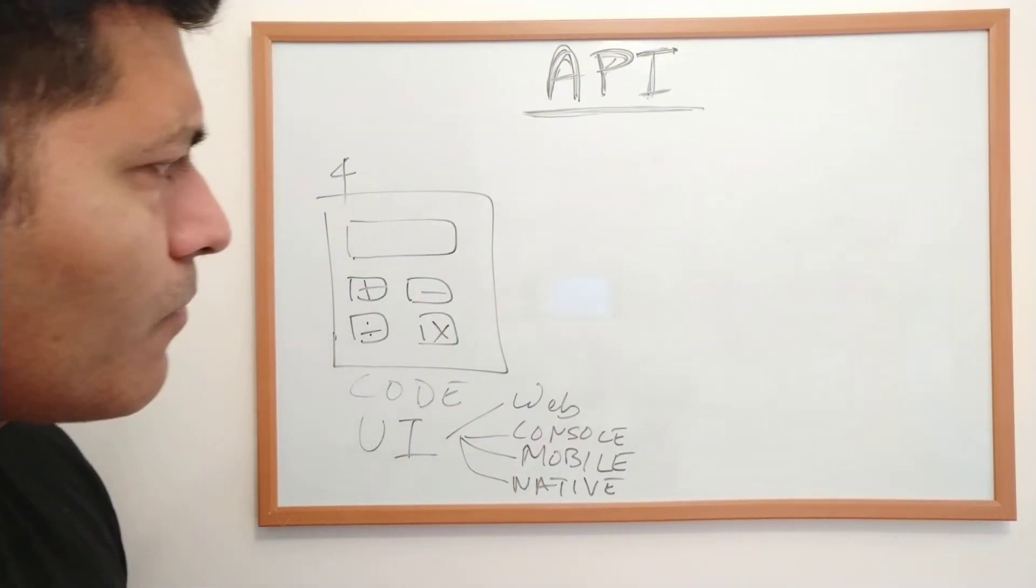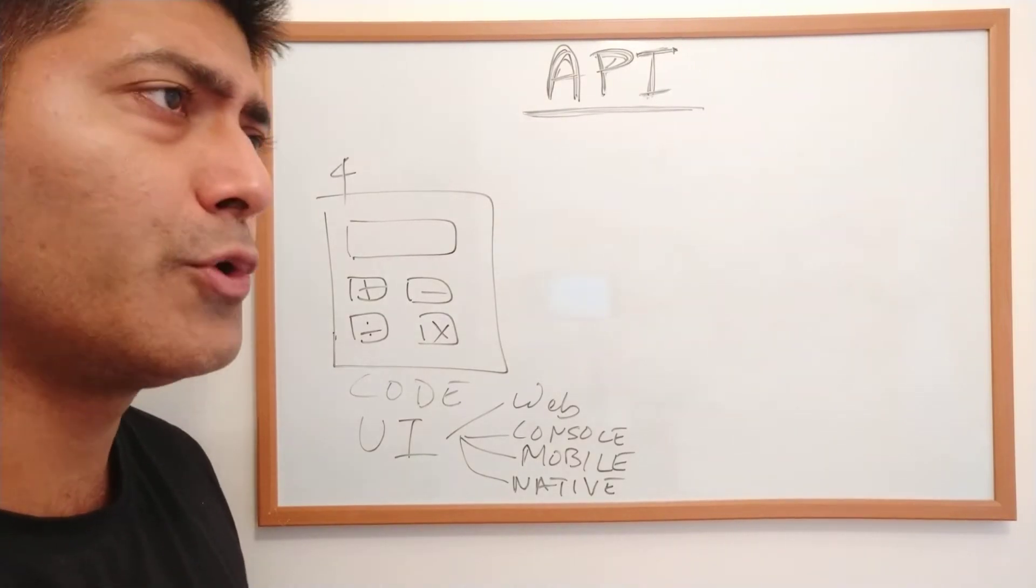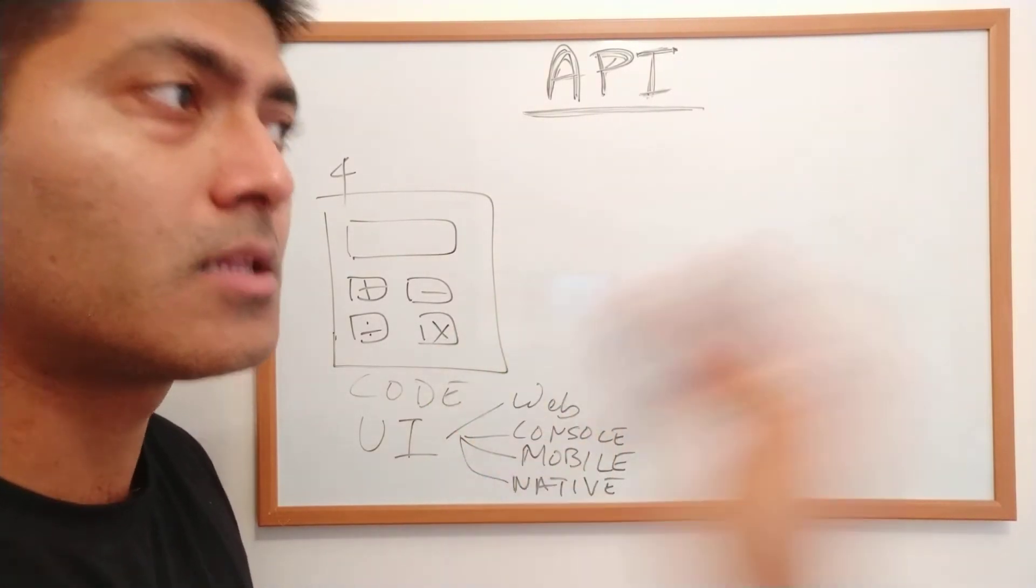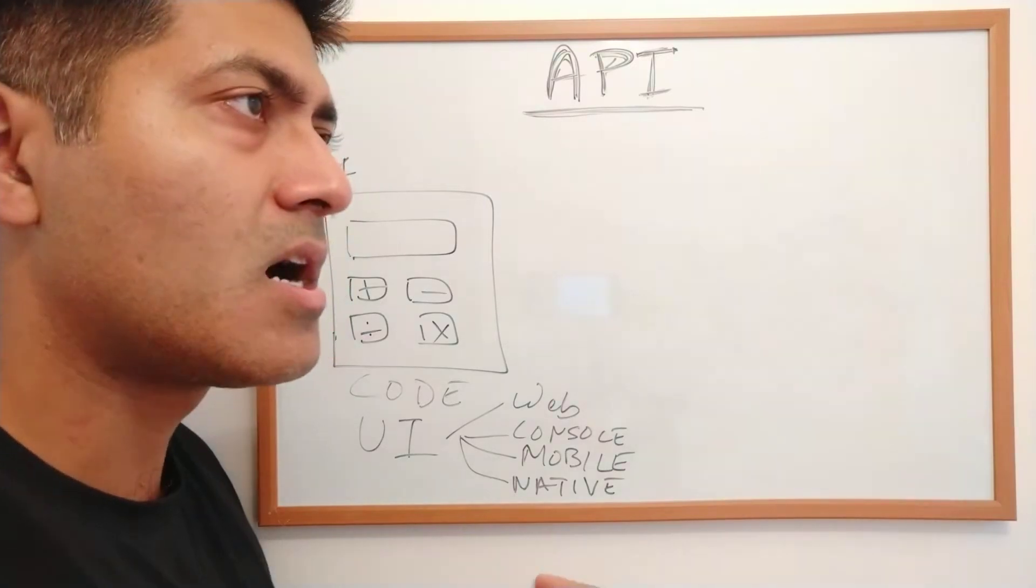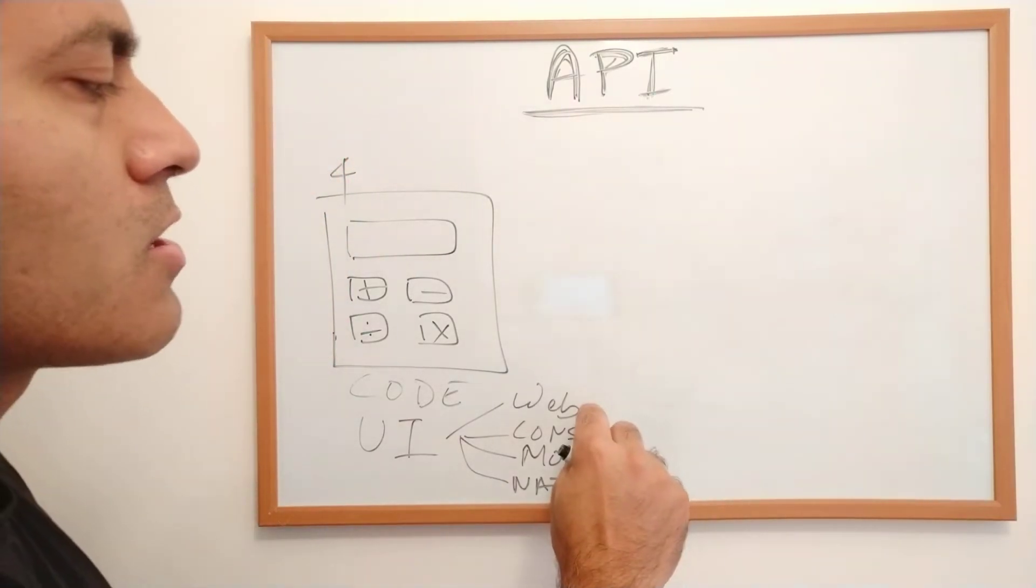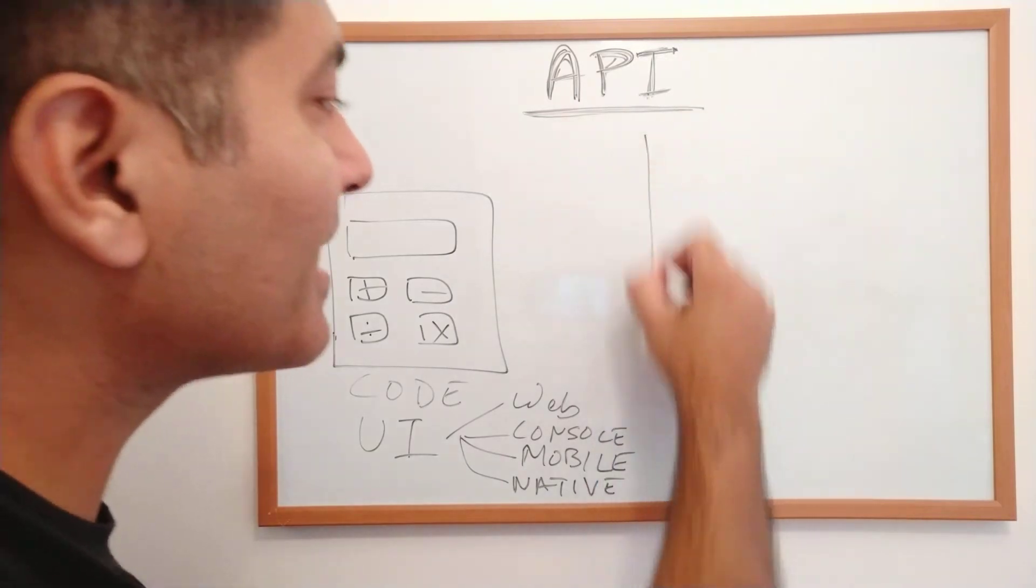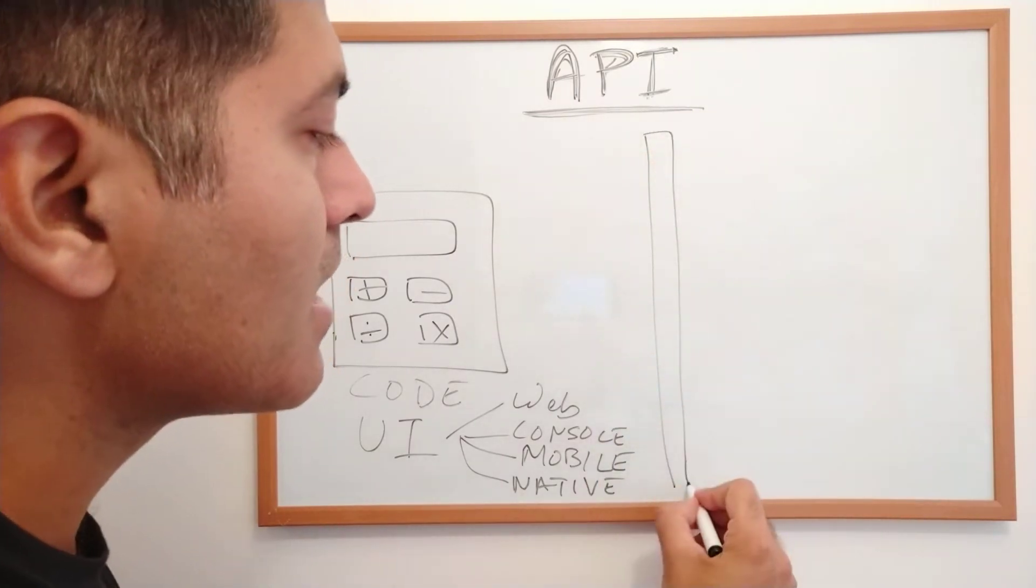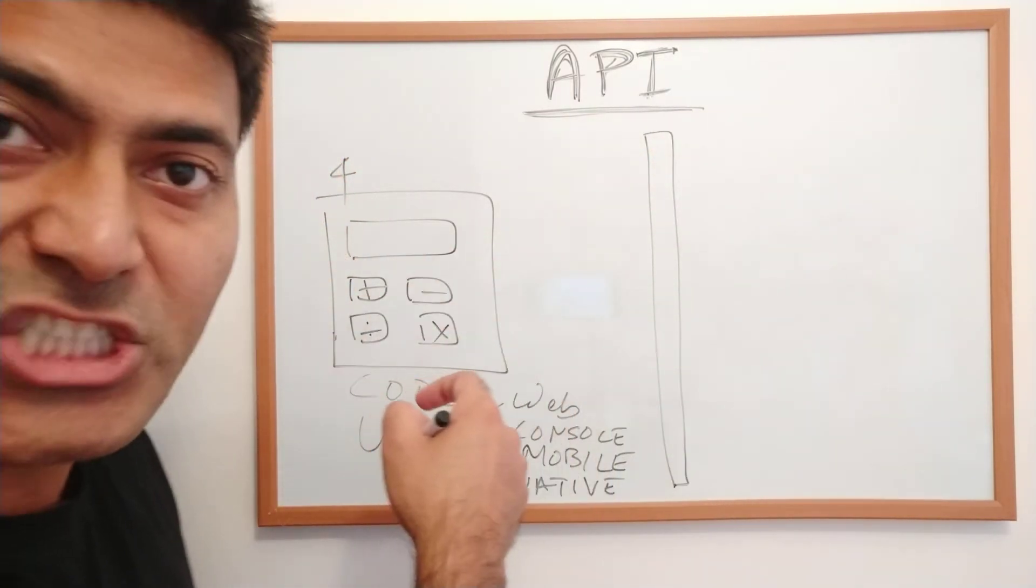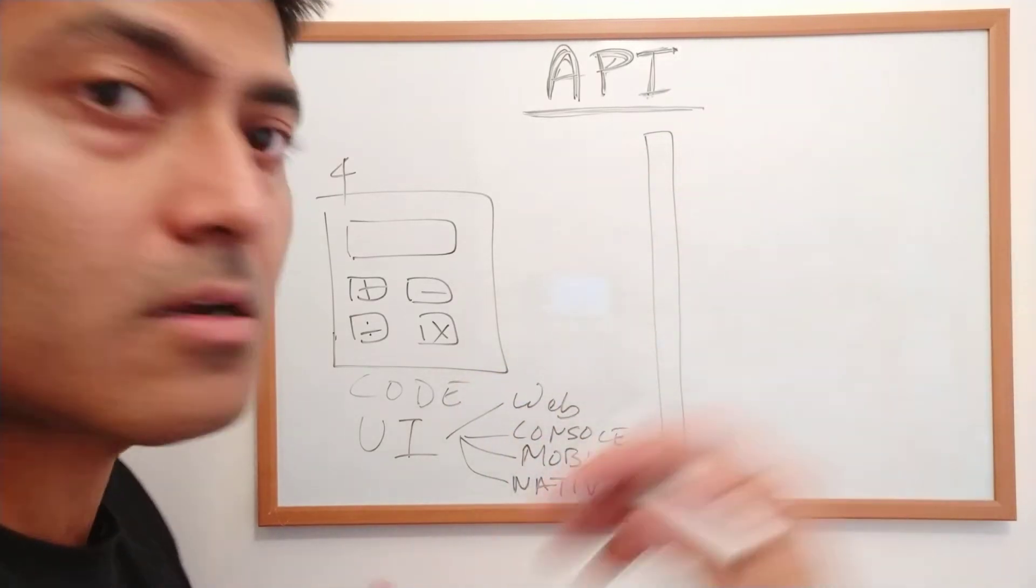However, what if other people or services want to use your calculator but don't want to use your UI? The concept of API is to create an interface between your application and the external world.